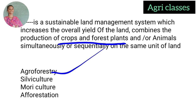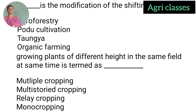Next question: DASH is a modification of shifting cultivation — agroforestry, podu cultivation, taungya system, or organic farming? The correct answer is taungya system. The taungya system is a modification of shifting cultivation.